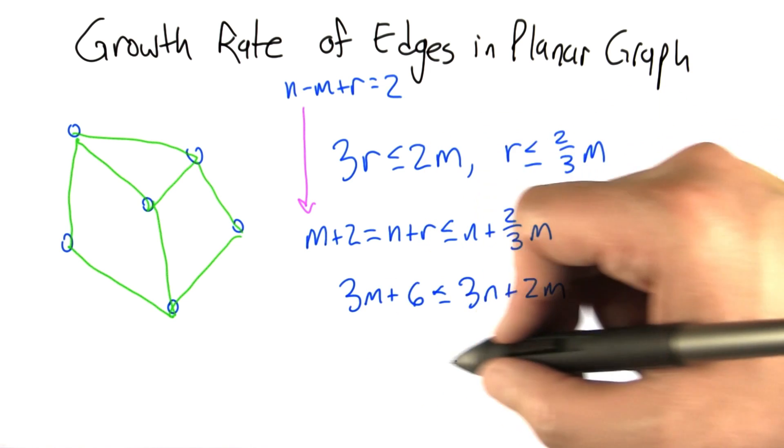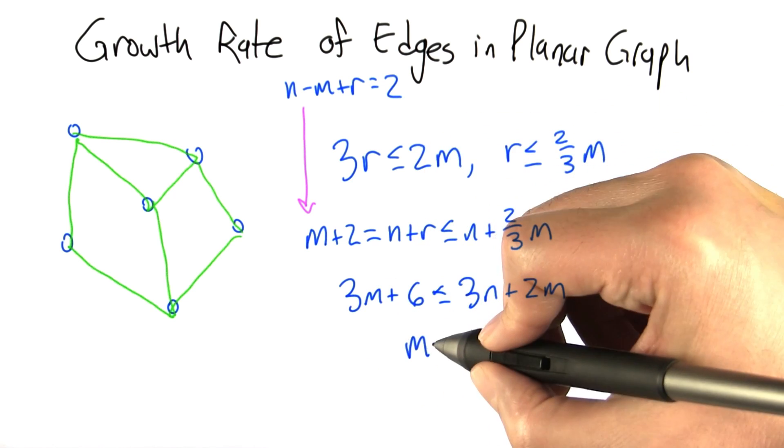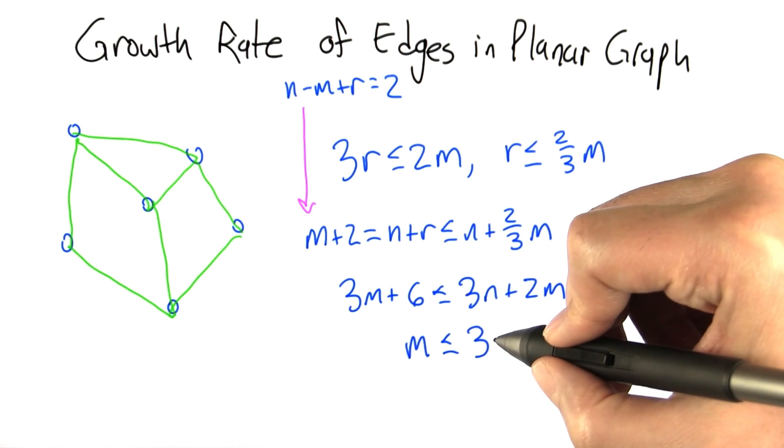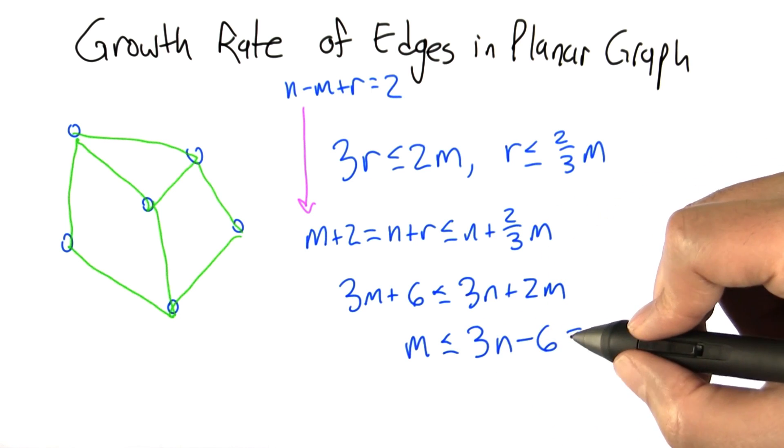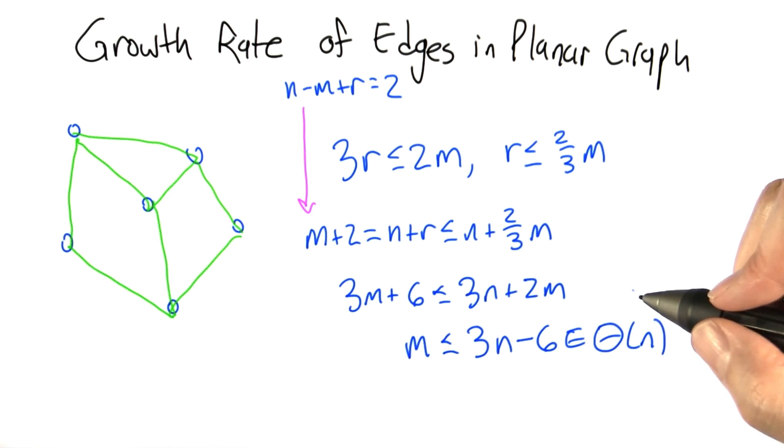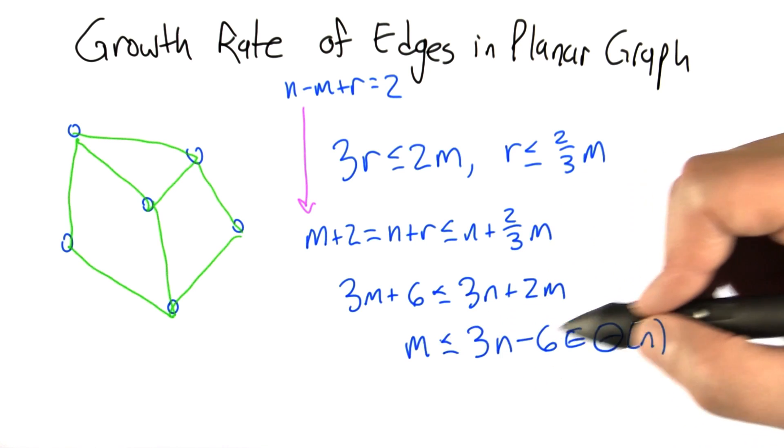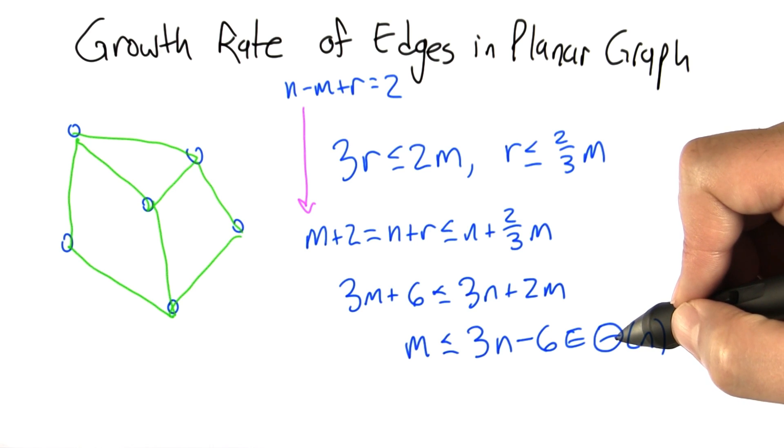Subtract m from both sides and subtract 6 from both sides and we get m, the number of edges, can't be any bigger than 3n minus 6, which this expression is in big theta of n. So the most edges that we can have in a planar graph is at most linear in the number of nodes.